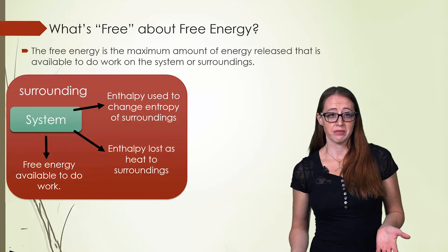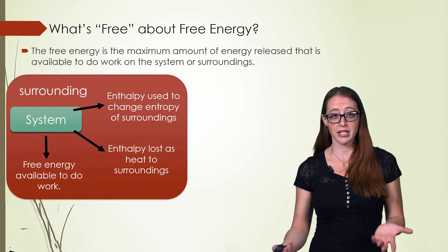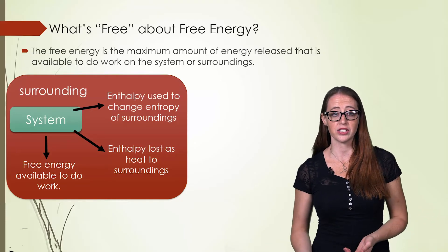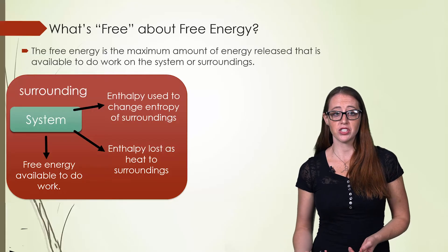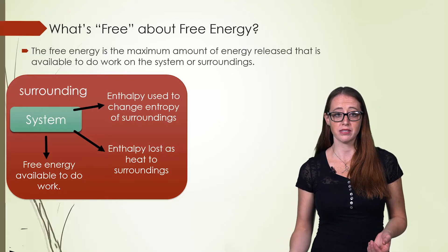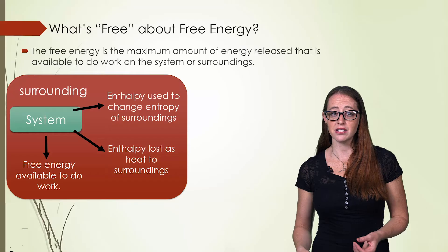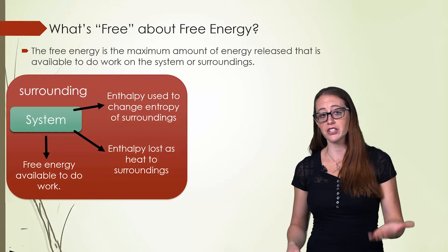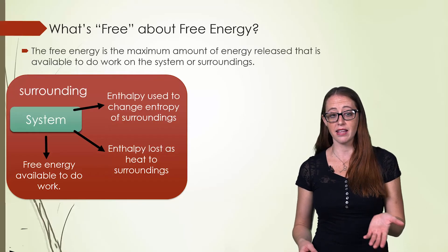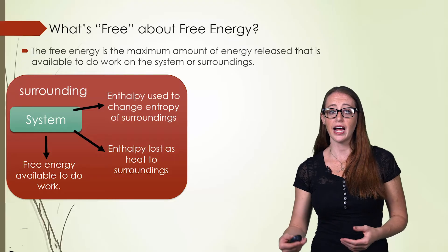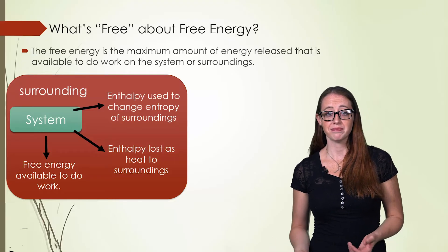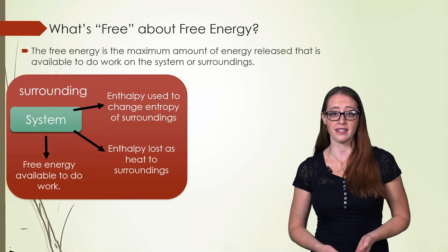We can visualize this with this picture. We have our system, and it is perhaps in this case releasing energy. Some of it is used to change the entropy of the surroundings. Some of it is lost as heat to the surroundings. And the free energy is defined as that that's left over and available to do work after those other two parts have been completed. And this is what the equation has in it.